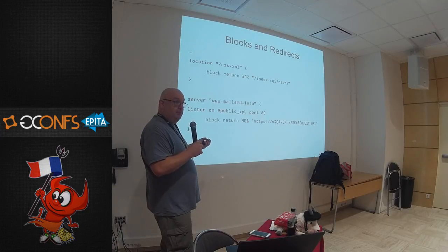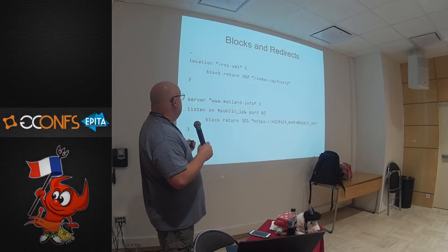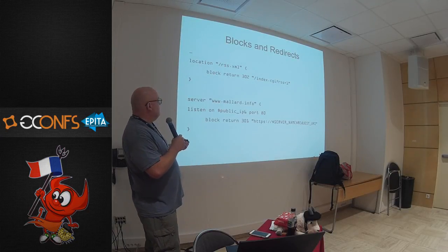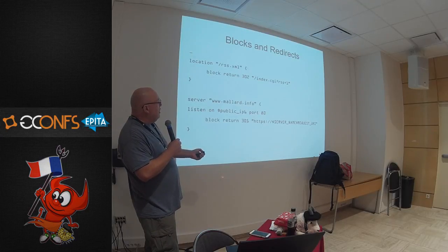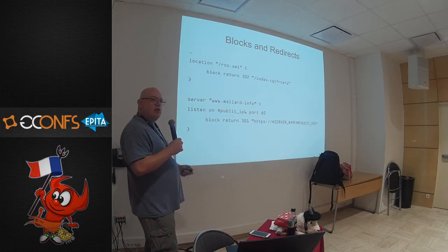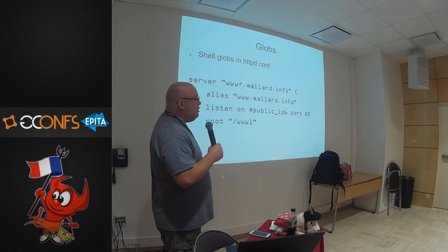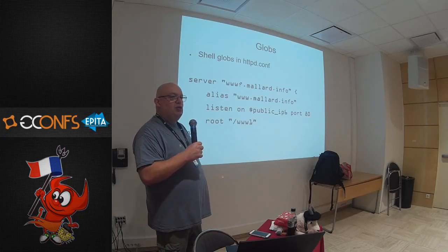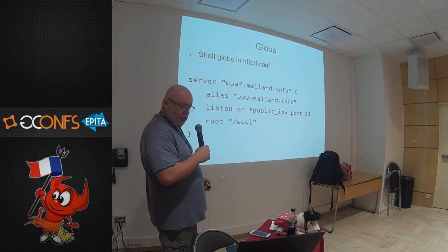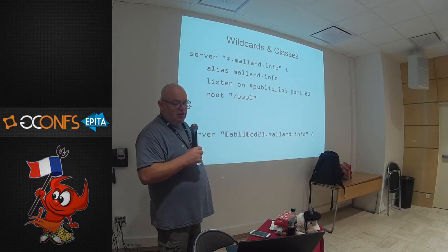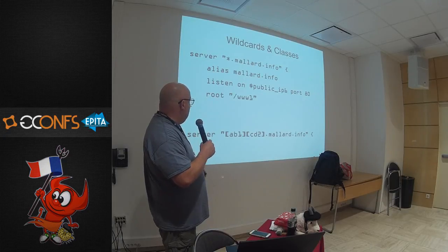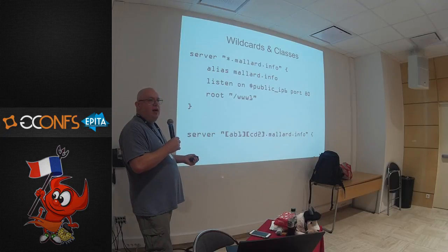With blocks and redirects, you can do things like listen on port 80 but transparently redirect to the TLS version of the website. You can use globs — standard shell globs. You have web servers 0 through 9 on your web farm; they can all share a config and share a root directory. You can use wildcards, just like the shell. Here we have any hostname under mallard.info with an alias for plain mallard.info. You can do really complicated, annoying things — I don't know why you would want to, but it's an option.